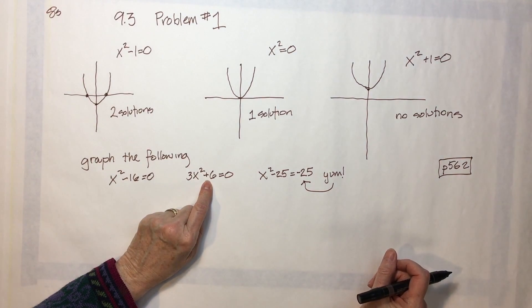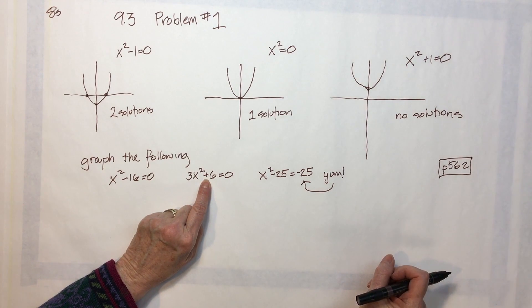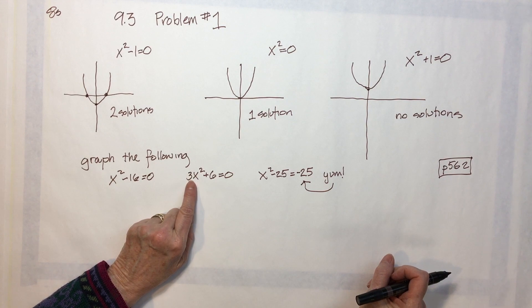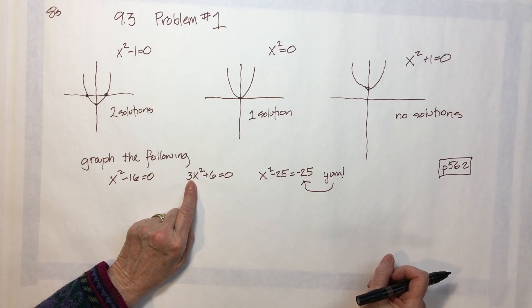This one, really, it looks like it's not going to have any solutions, because it's got a positive 6, and it's going to be a very narrow parabola because that's got a 3 instead of a 1.